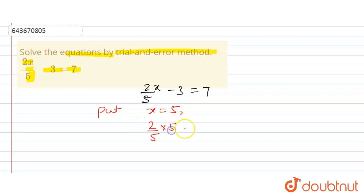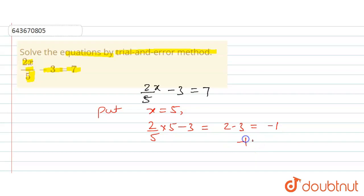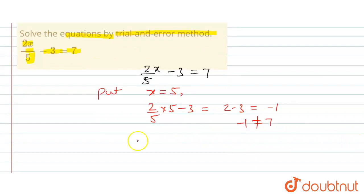For x equals five: two upon five into five, minus three — five will cancel out — so two minus three equals minus one. Minus one is not equal to seven, so this is not a solution.